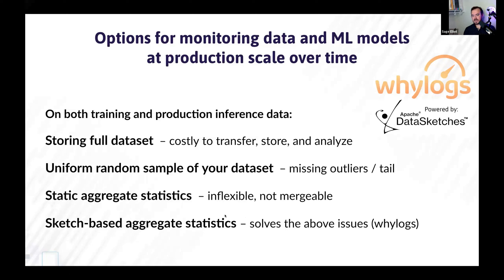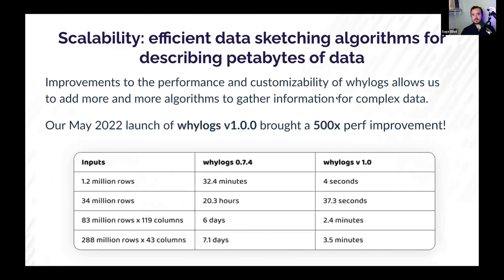You're not going to be missing any outliers, and you get a really lightweight profile that you can do anything you want with. You might pass that profile off an edge device to monitor for data drift. We have a whole blog post on this, and our engineer did a really cool talk on the scalability of WhyLogs. It used to be quite a bit slower, but now with the way we built WhyLogs, you can profile up to 288 million rows and 43 columns in just 3.5 minutes — which is insanely fast. It used to take seven days.